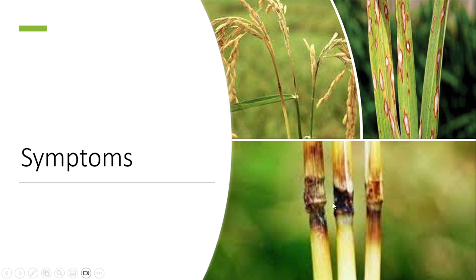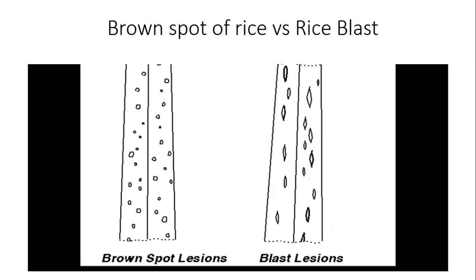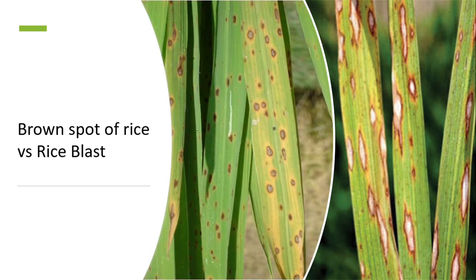Here you can see the difference between brown spot of rice and rice blast. In brown spot, the lesions are irregular, oval to circular in shape. In rice blast, the lesions are eye-shaped or spindle-shaped. You can clearly differentiate between the two: brown spot shows circular to oval lesions, while rice blast lesions are eye-shaped or spindle-shaped.